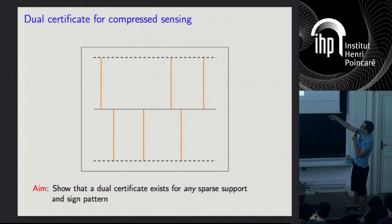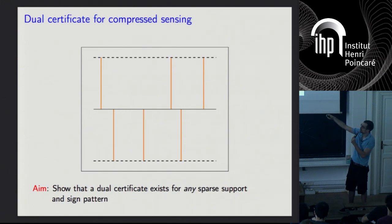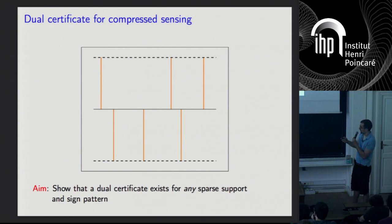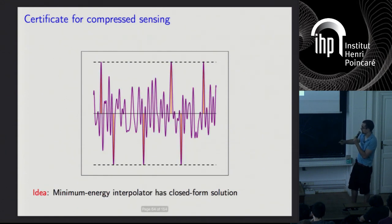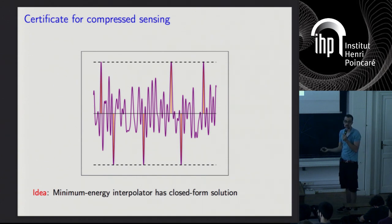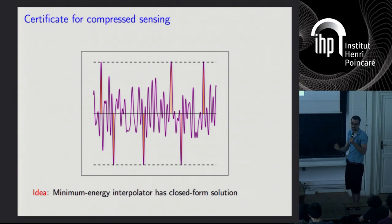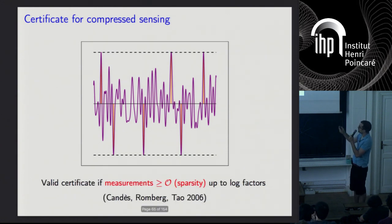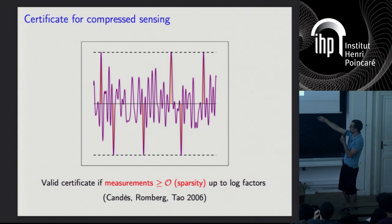So for an arbitrary support, you take the sign of the sparse signal at its non-zero locations, and you need to linearly combine these random sinusoids to interpolate the sign while keeping the magnitude below one — making it a valid sub-gradient. One approach: if the sparsity isn't too high, take the minimum L2 norm linear combination of the random sinusoids that interpolates. That has a closed-form solution, and this is what Candès, Romberg, and Tao did in 2006 to show compressed sensing from random frequency measurements works for a measurement count linear in sparsity up to log factors.